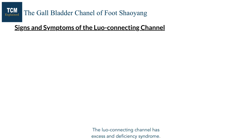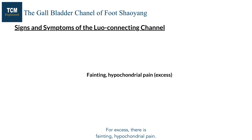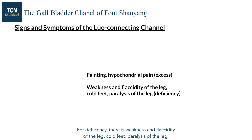The luo connecting channel has excess and deficiency syndromes. For excess, there is fainting and hypochondrial pain. For deficiency, there is weakness and flaccidity of the leg, cold feet, and paralysis of the leg.